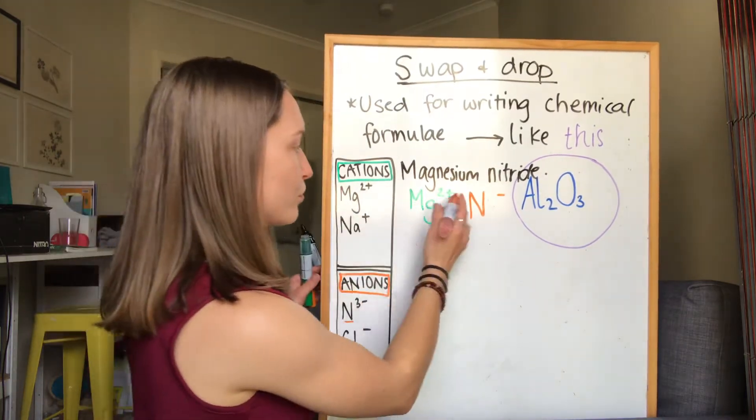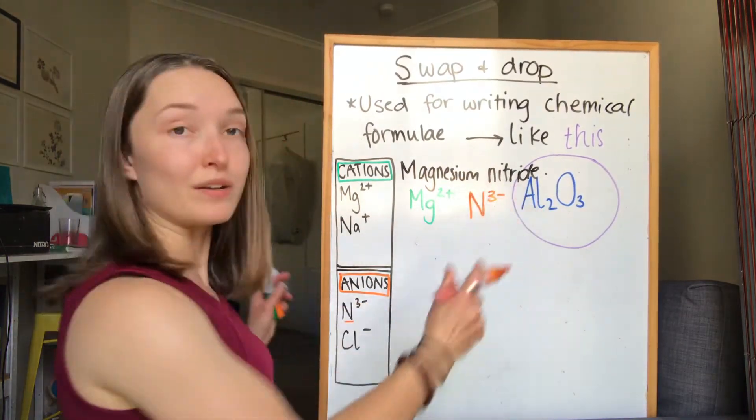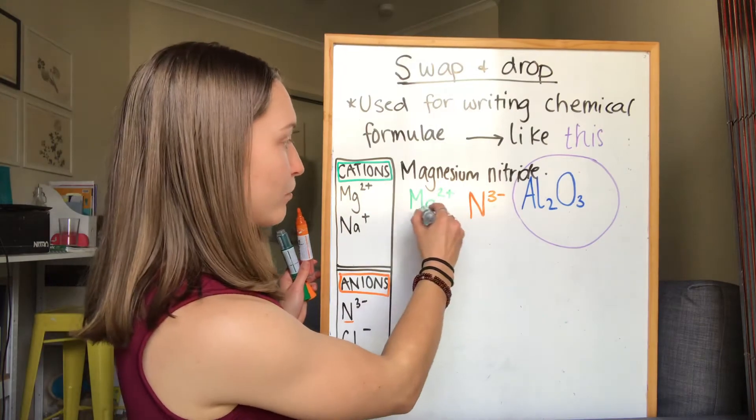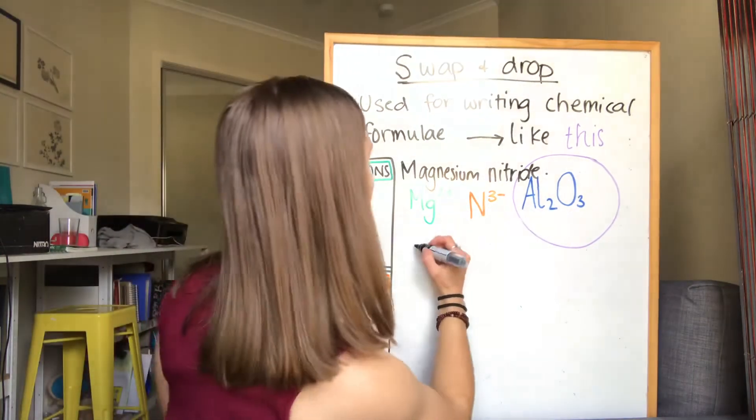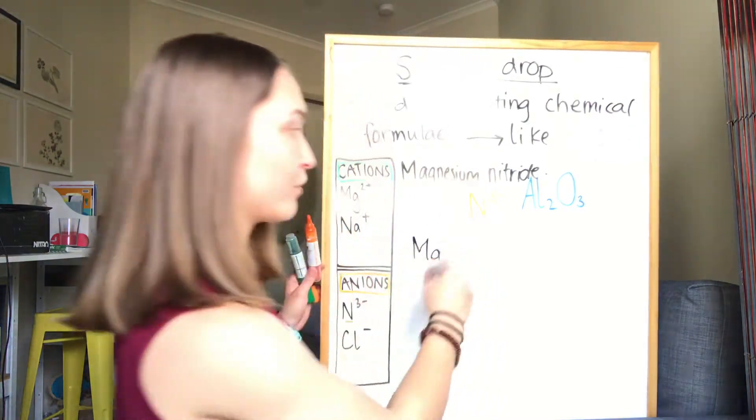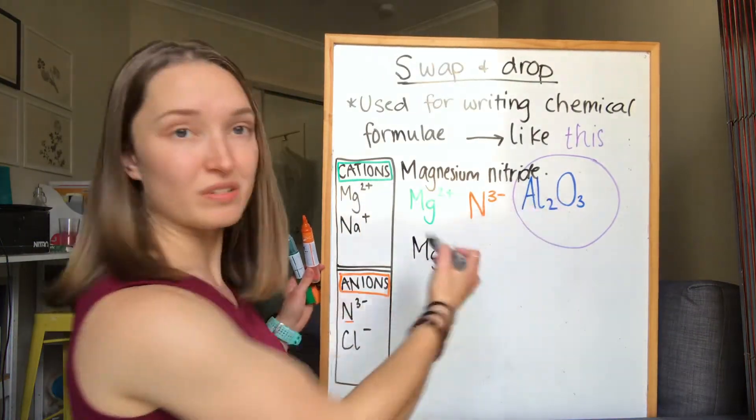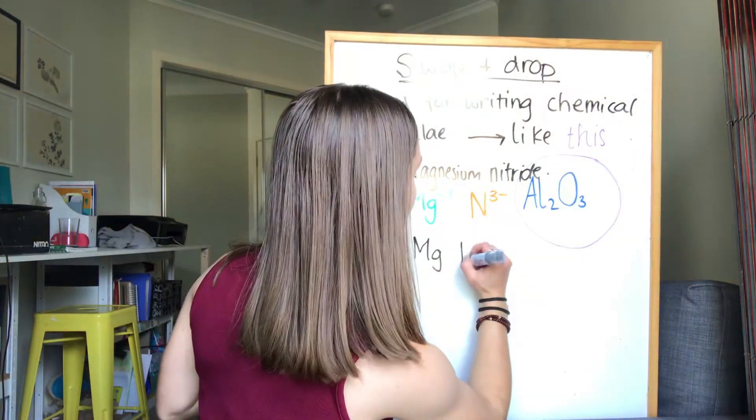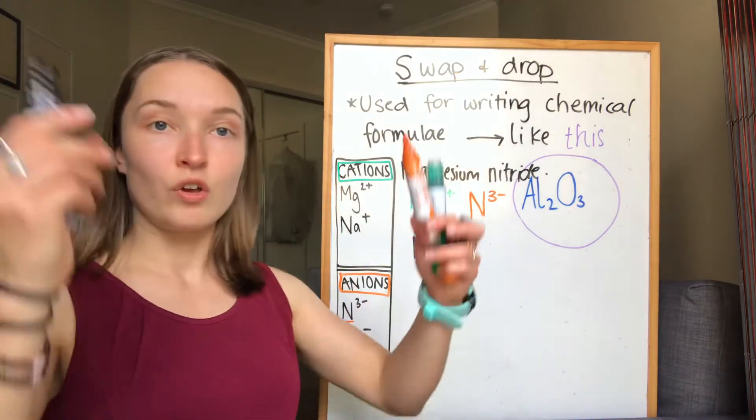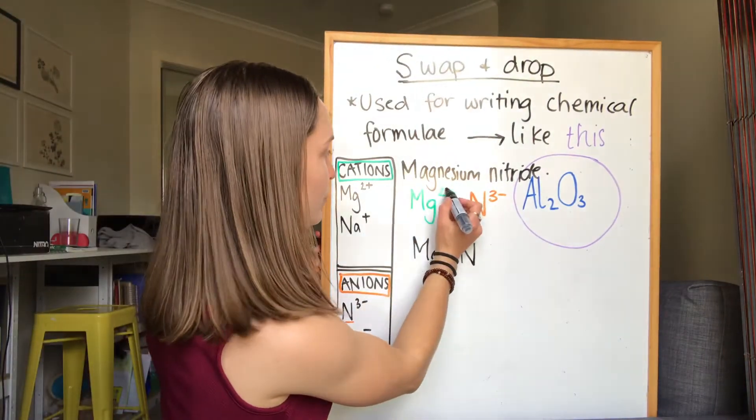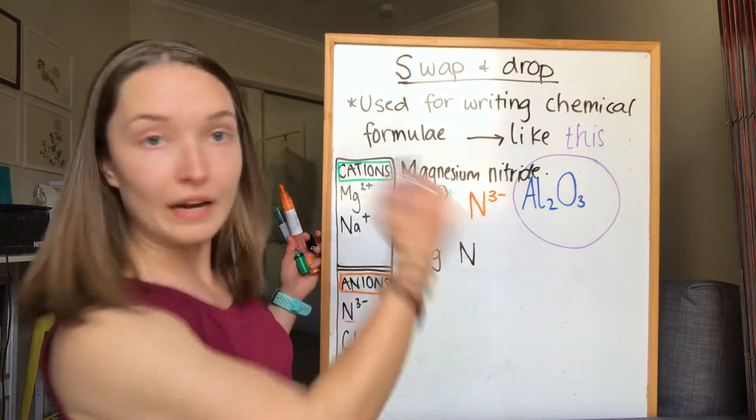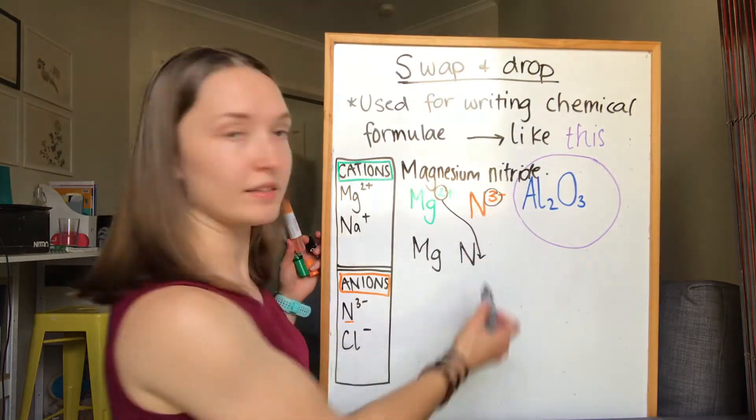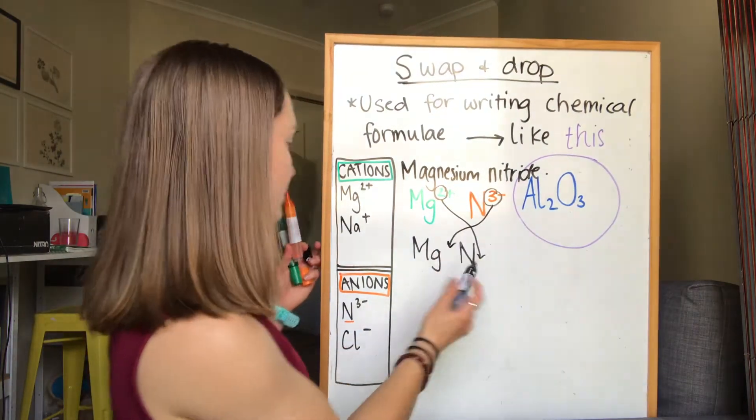The next step is to rewrite these letters down here. So we have magnesium first, just like aluminium, because that's a cation, because it's a metal. And then the nitride. When we say swap, we swap the charges. So the two unattaches from the magnesium and comes down here, and the three unattaches from the nitride and comes down here. So it becomes magnesium with the three and nitride with a two. That's the swap.